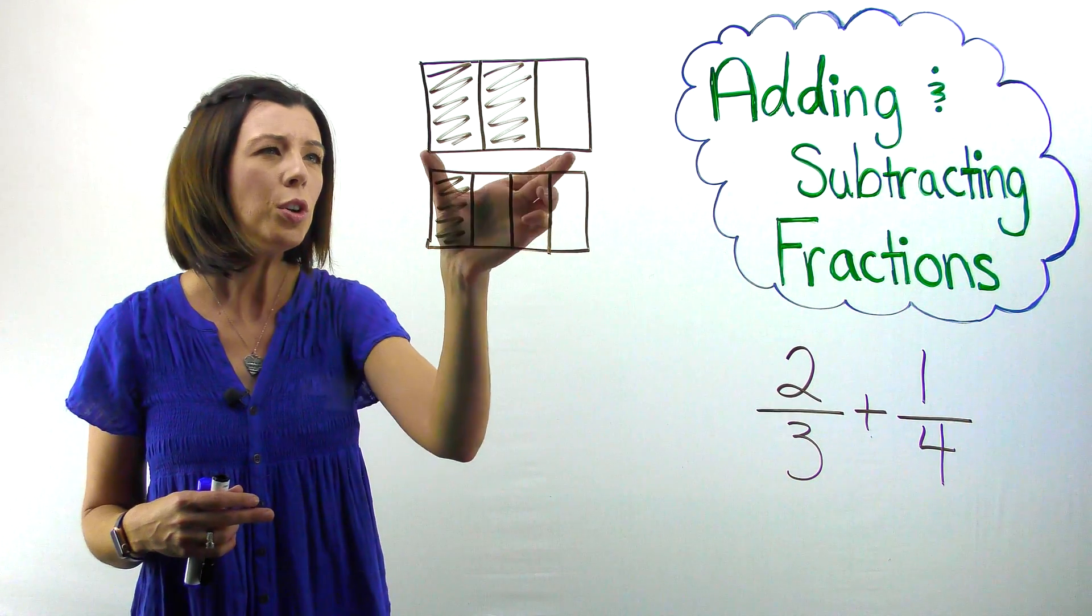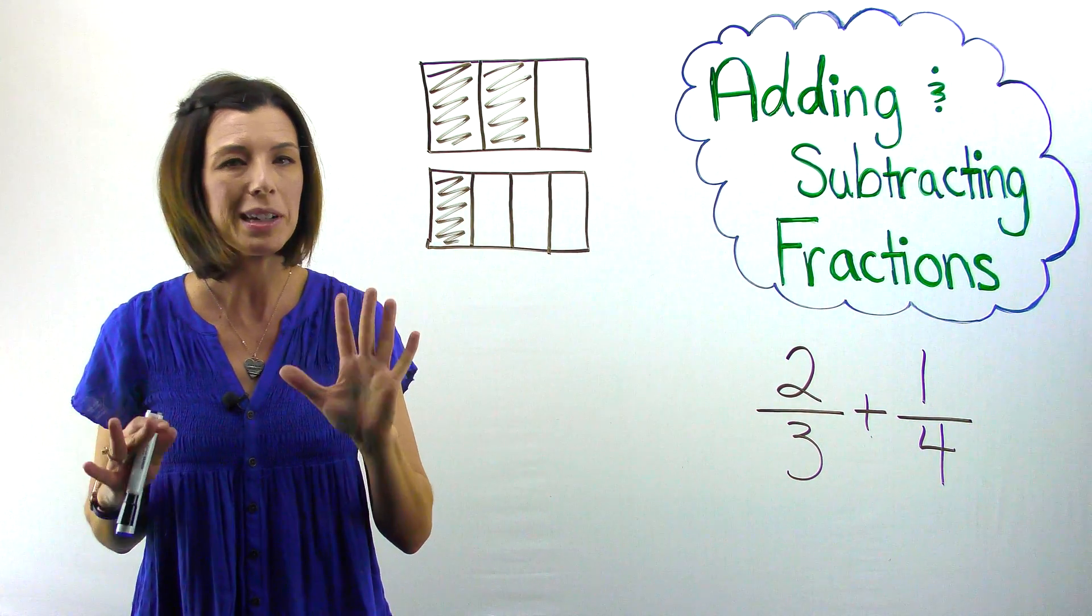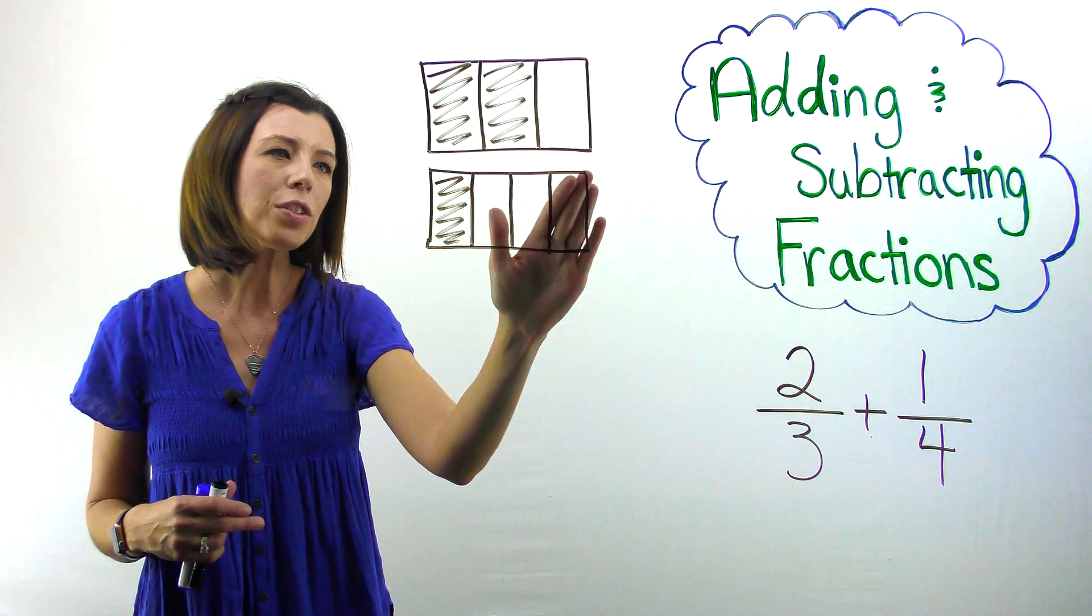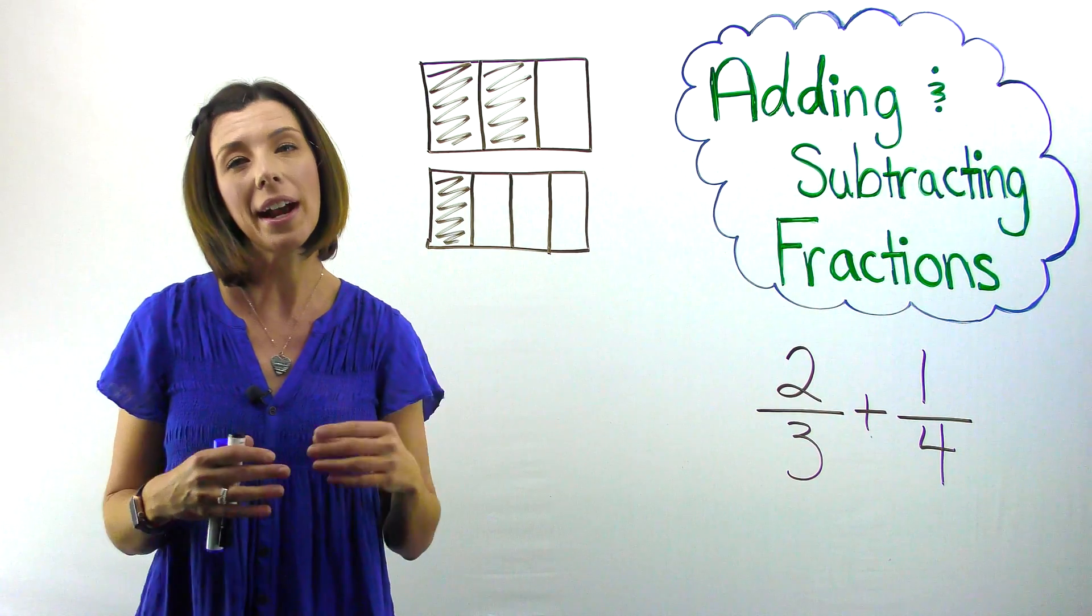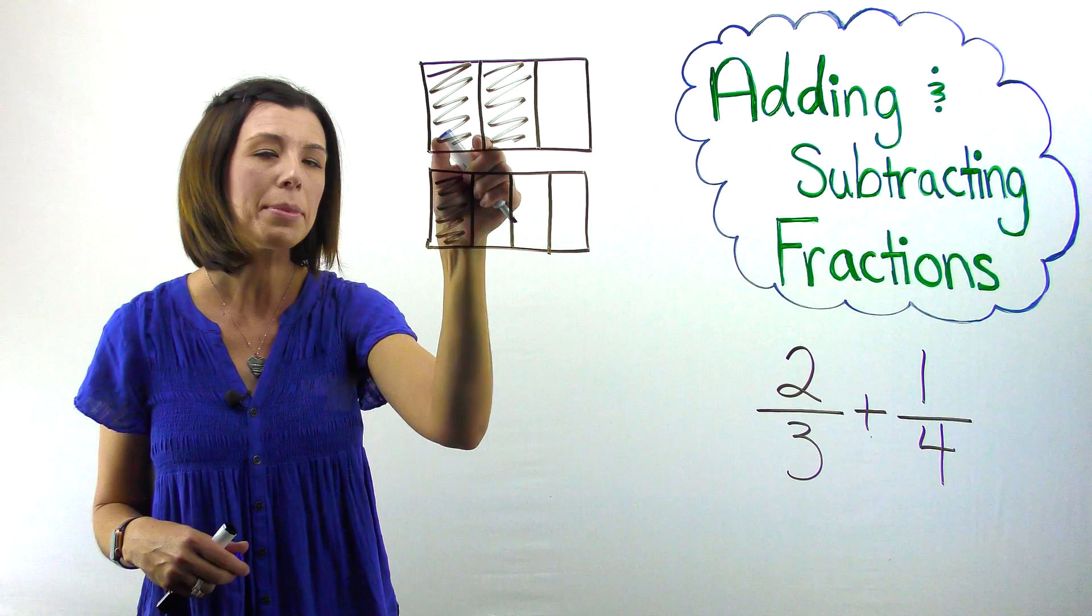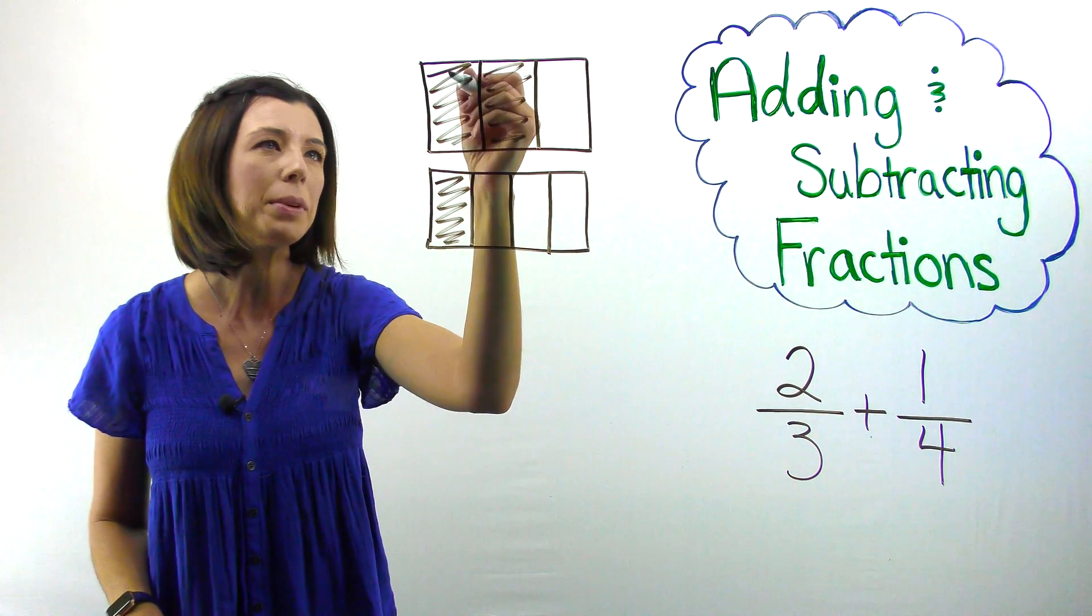Oh, and one other note. Notice that my units are the exact same size, or they're supposed to be. Don't kill me on my art skills. So I need to make sure these are all the same size pieces so that I can add them together. I know that I can split each one of these copies of a third into four equal pieces.